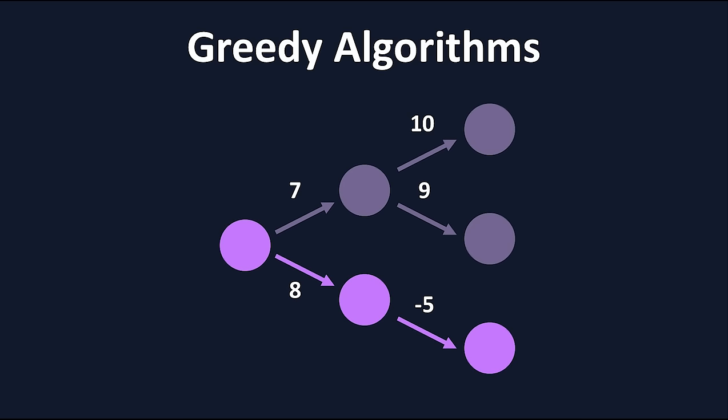Hopefully, you came up with this path as the correct solution. However, using a greedy algorithm, we might not get this. The algorithm first looks at the first two choices, 7 and 8. It chooses what's best right then, which is a 7, and moves on.